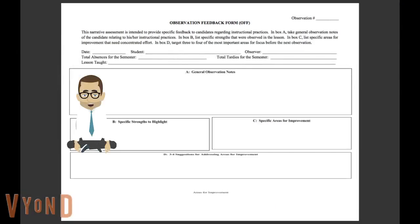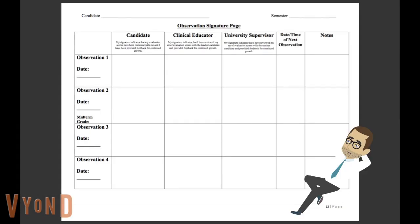Let's move on to our next two forms that come directly from the STAR 2018 evaluation tool and deal with the assessing of your student teaching candidate as the semester progresses. First up is the OFF, or Observation Feedback form. This will be used to document actual scheduled formal observation notes. This next form is the Observation Signature page, and it'll be used to show evidence that all parties involved have read and understand the notes from the STAR tool and the observations as they take place. If you have questions about these two documents, don't worry — they will be discussed in greater detail in a video dedicated to the STAR 2018 evaluation tool. For now, we want you to know that they are official documents and they will be collected.